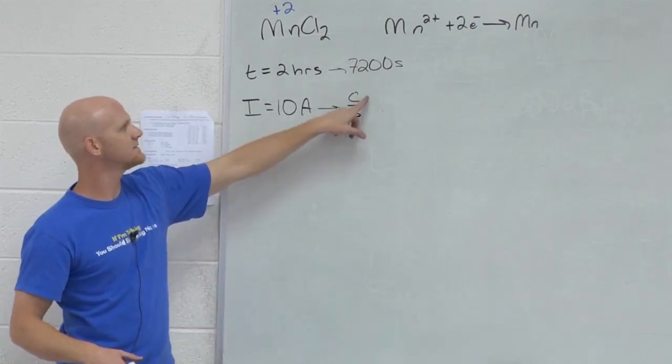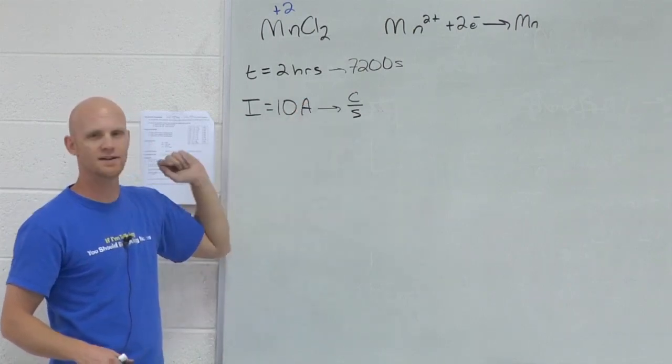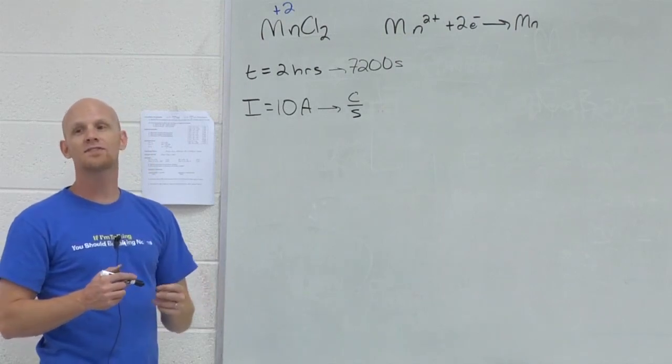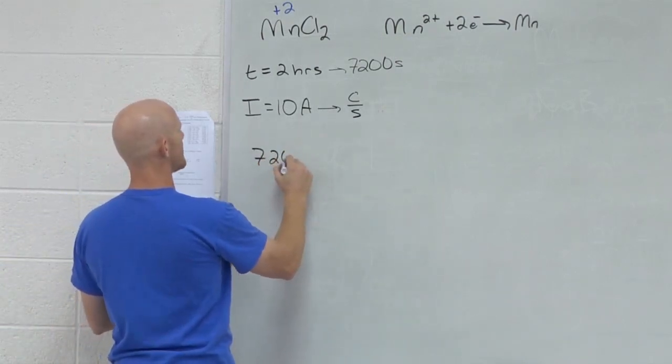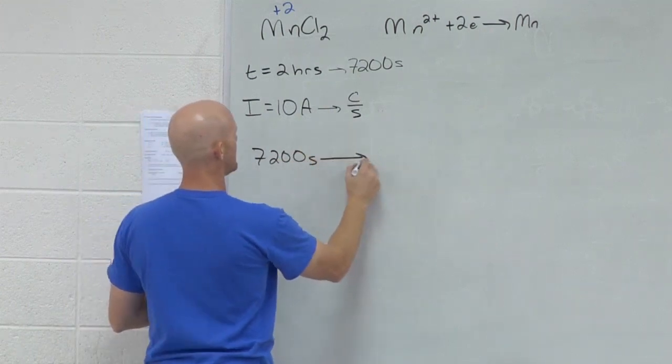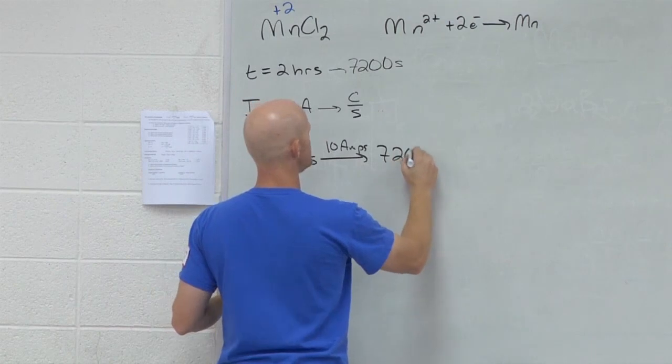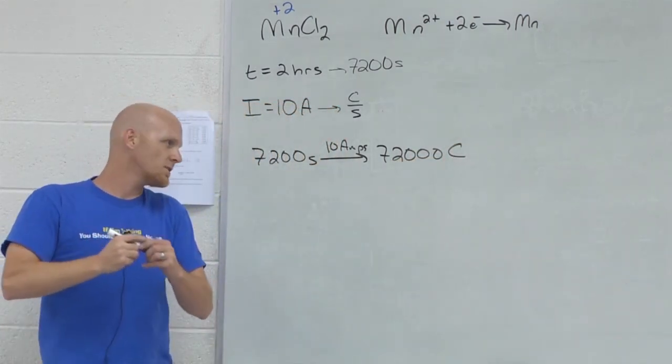And every second 10 coulombs passes through our wire, 10 coulombs per second. And so in 7,200 seconds, we could figure out that it's totally 72,000. So notice we're taking our 7,200 seconds and we're taking our 10 amps and finding out that we've got 72,000 coulombs of charge.